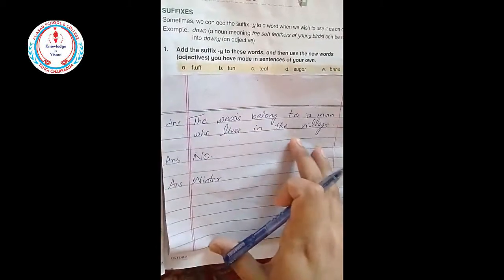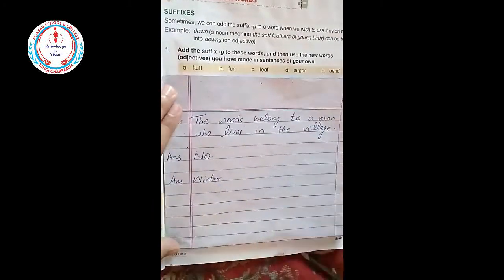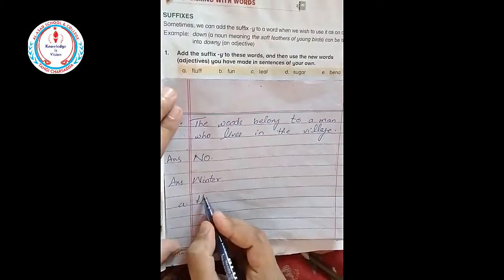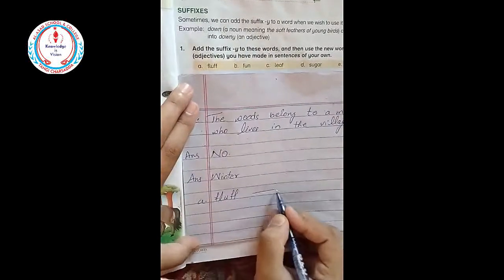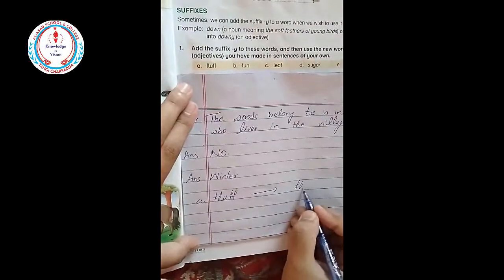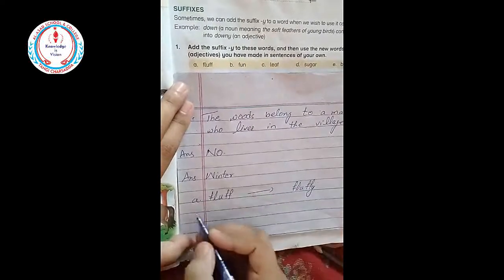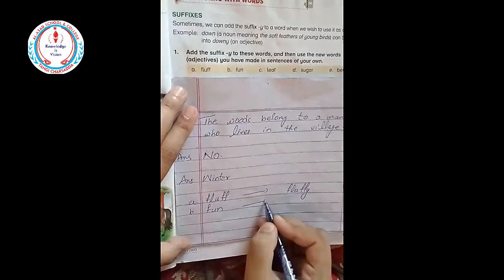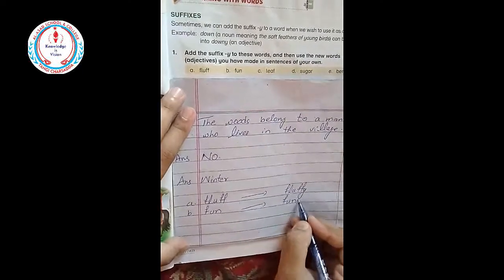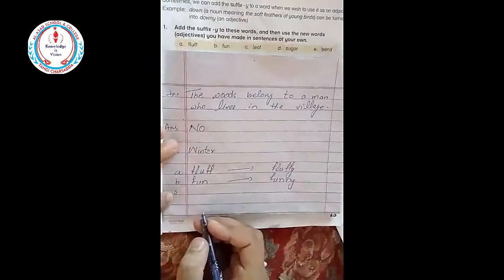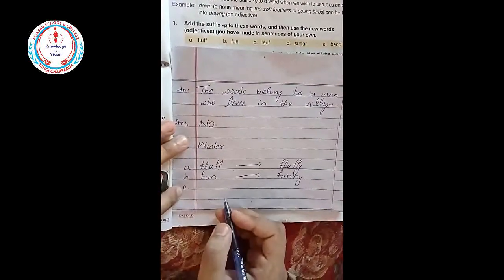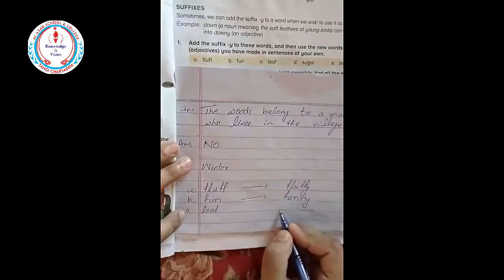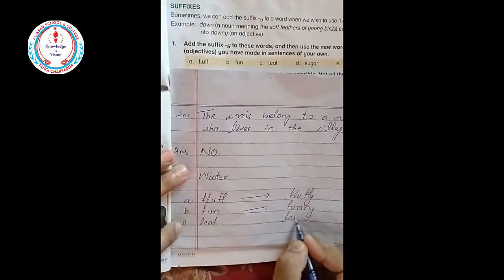So first of all: fluff. Fluff becomes fluffy. Then: fun. Fun becomes funny. Next one is leaf, this is leafy.